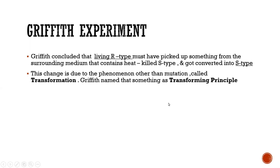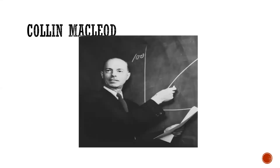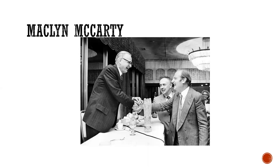After 1928, there was a lot of research on the transforming principle. The year is 1944, at Rockefeller University, U.S. Professor McCarty is giving awards to two scientists — Watson and Crick later received the Nobel Prize. So what did Avery, MacLeod and McCarty do?